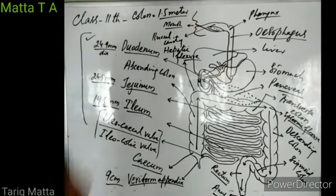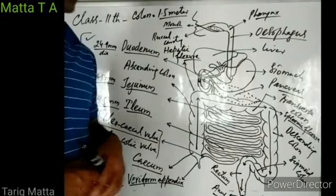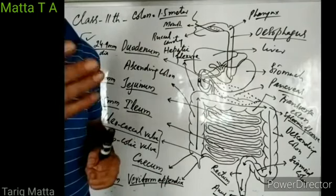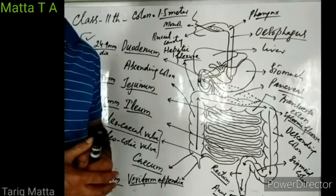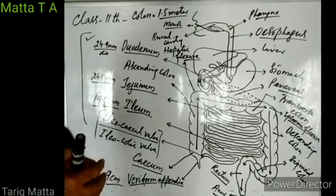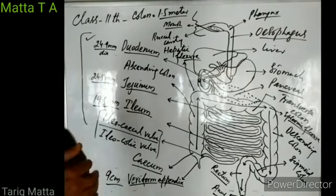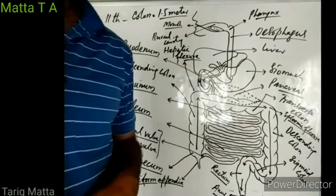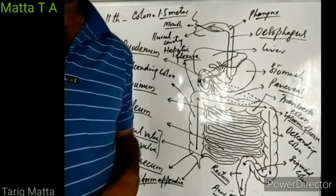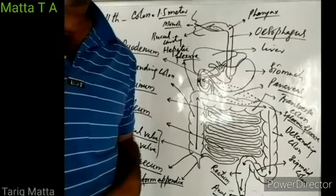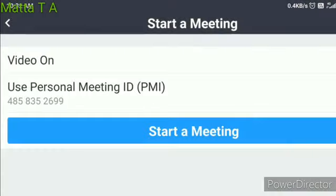So that is about the alimentary canal. Now we have to see the histology of the small intestine — what is contained in the wall of the small intestine. We need to cut a section of it, but our time is running out. Inshallah, tomorrow we will see the histology of the alimentary canal.